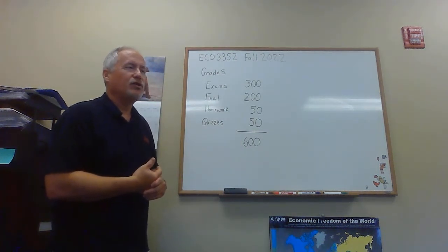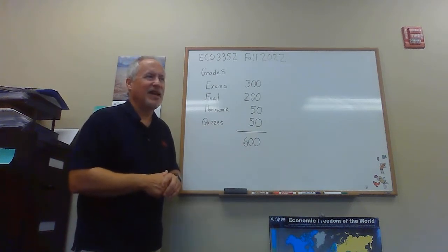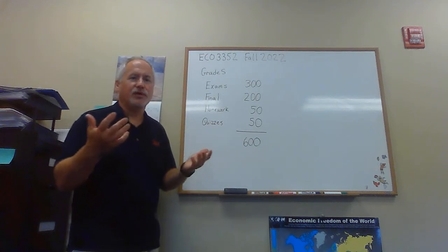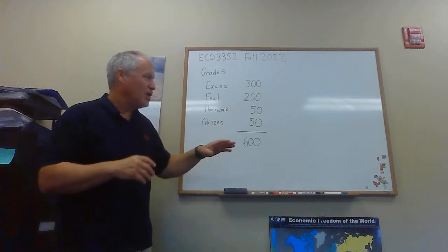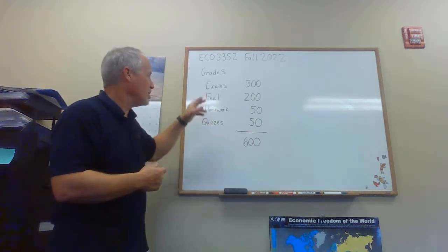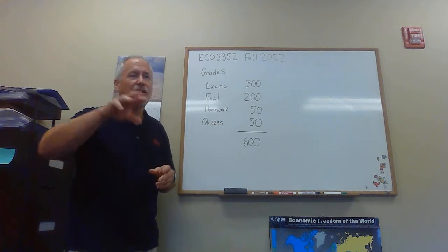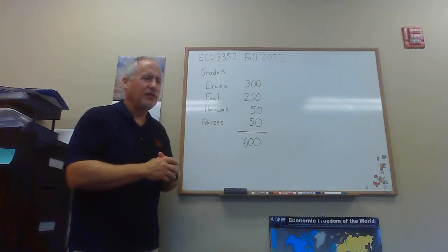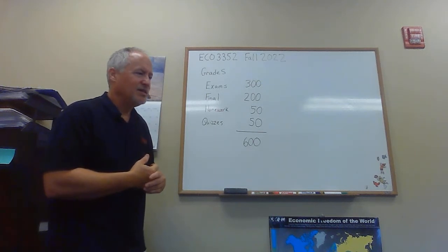At the end we have 600 total points. I use a strict point schedule — two people with the same number of points get the same grade. The cutoffs are 90, 80, 70, and 60 percent of 600 points. So 540 points or more guarantees an A, and 480 or more guarantees a B. Those cutoffs might be adjusted downward slightly at the end depending on how grades shape up. If the exam average is below 75, we'll have a curve to bring the average up around 75.